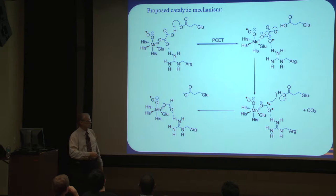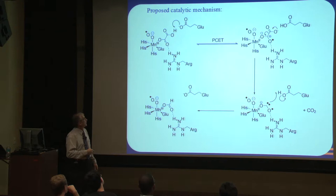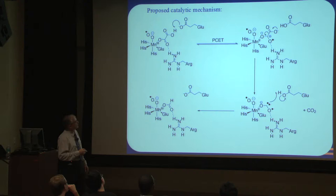The first step is a proton-coupled electron transfer. That means an electron moves and a proton moves at the same time, or very shortly after each other. Where does the electron go? The electron comes from the oxalate to the manganese, reducing it. Manganese goes from oxidation state 3 to 2. The oxalate loses an electron, weakening that carbon-carbon bond between the two halves. As a result, we're going to lose carbon dioxide in the next step. The proton comes from the monoanion and gets picked up by one of those amino acids.